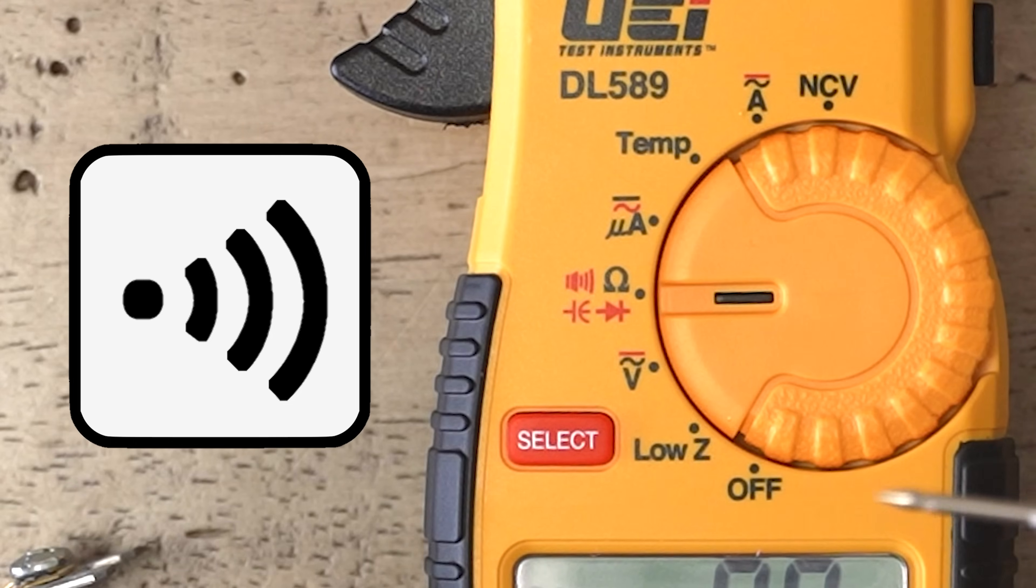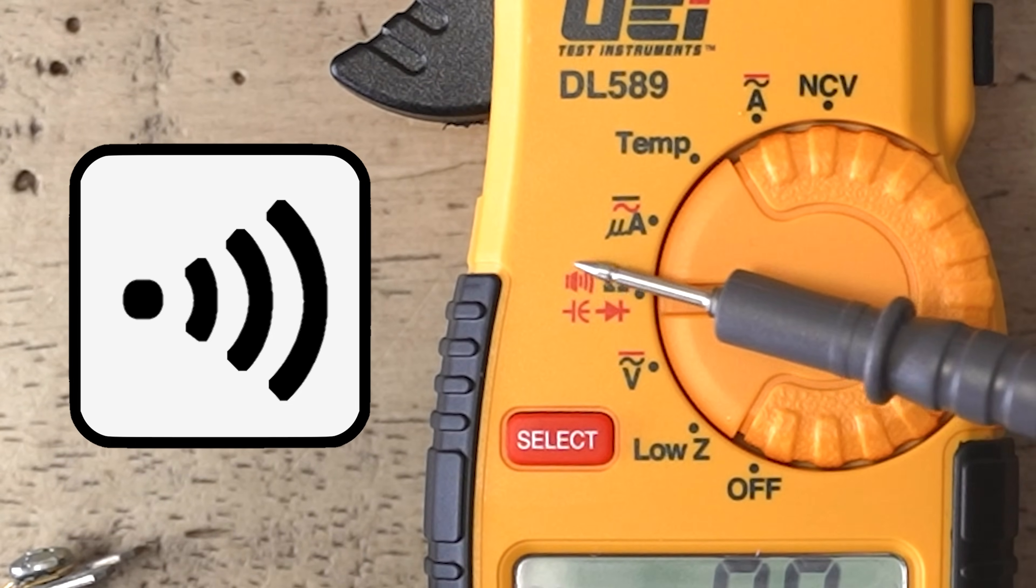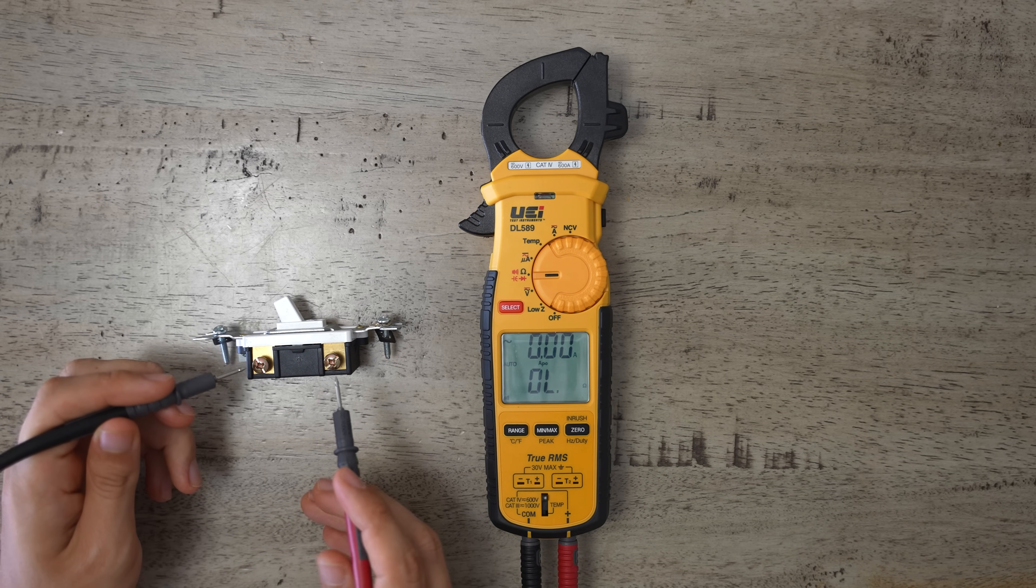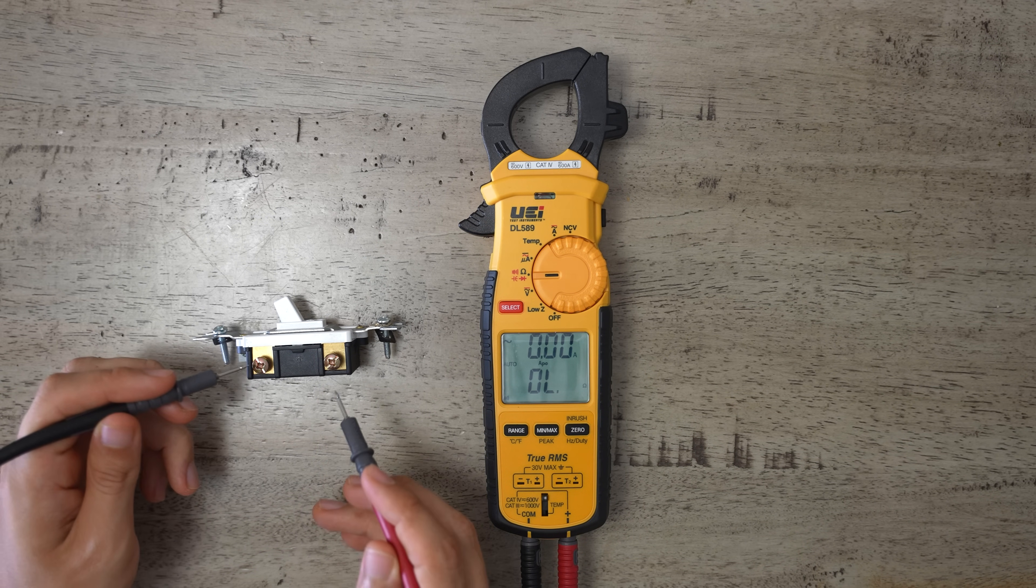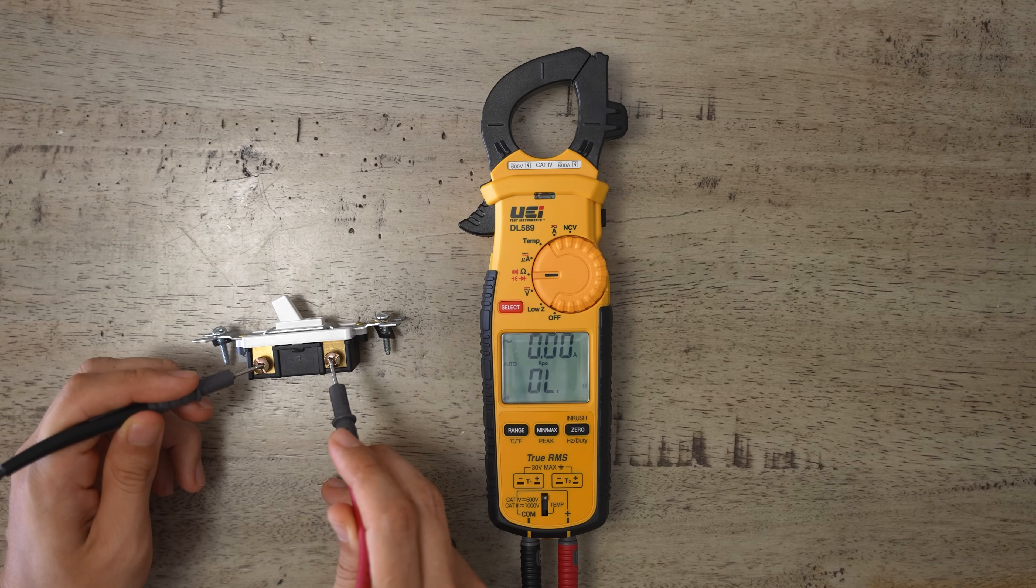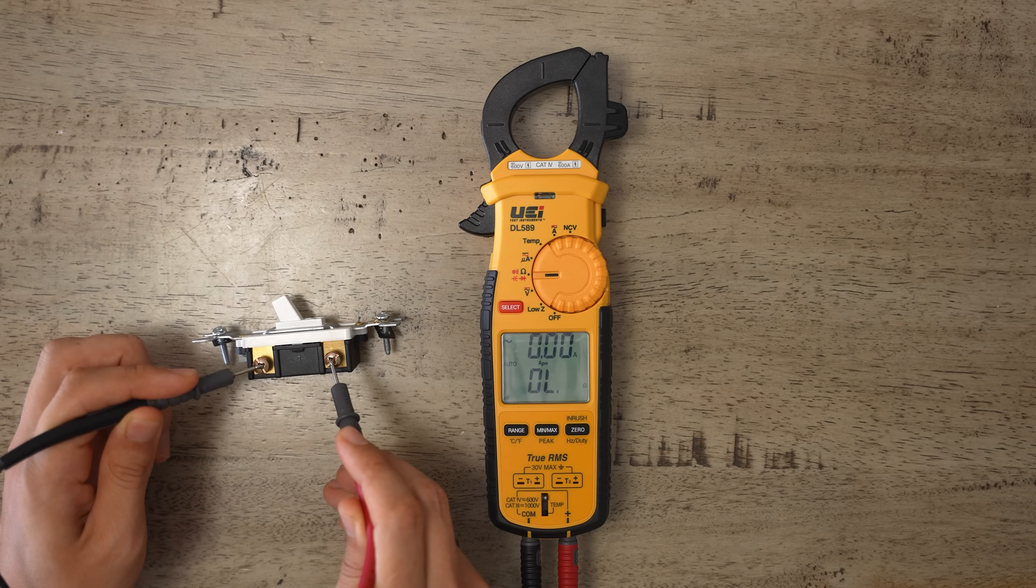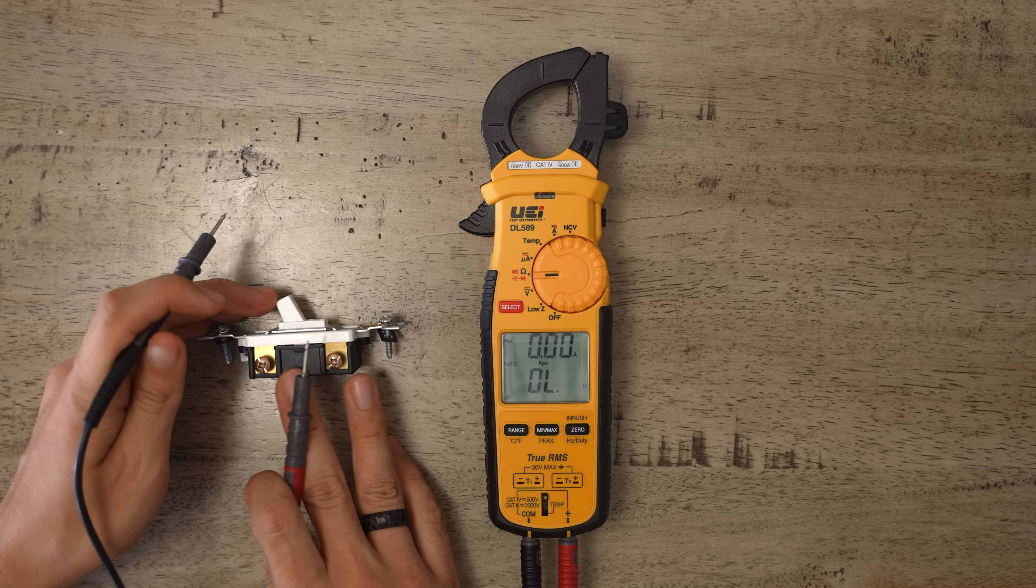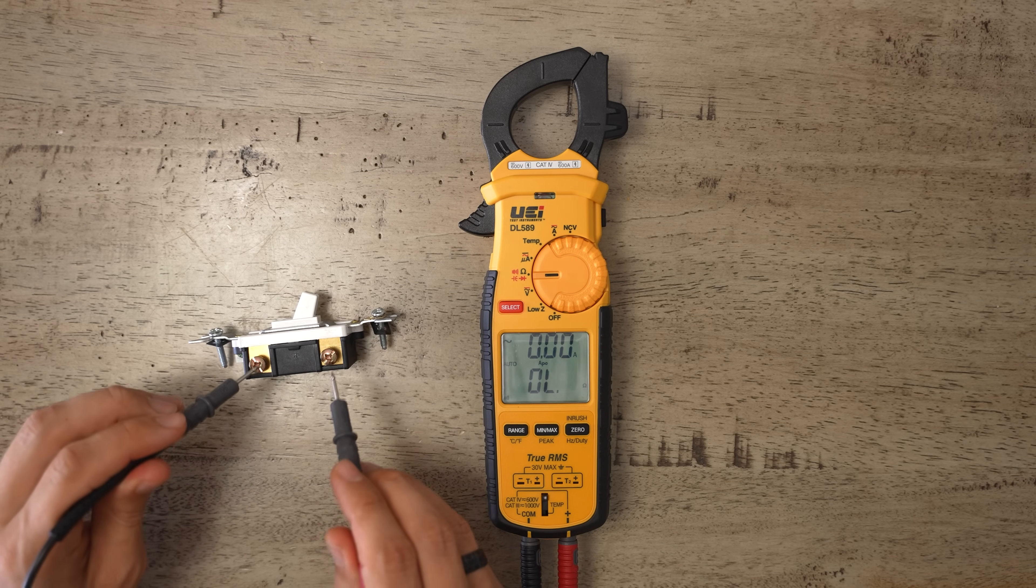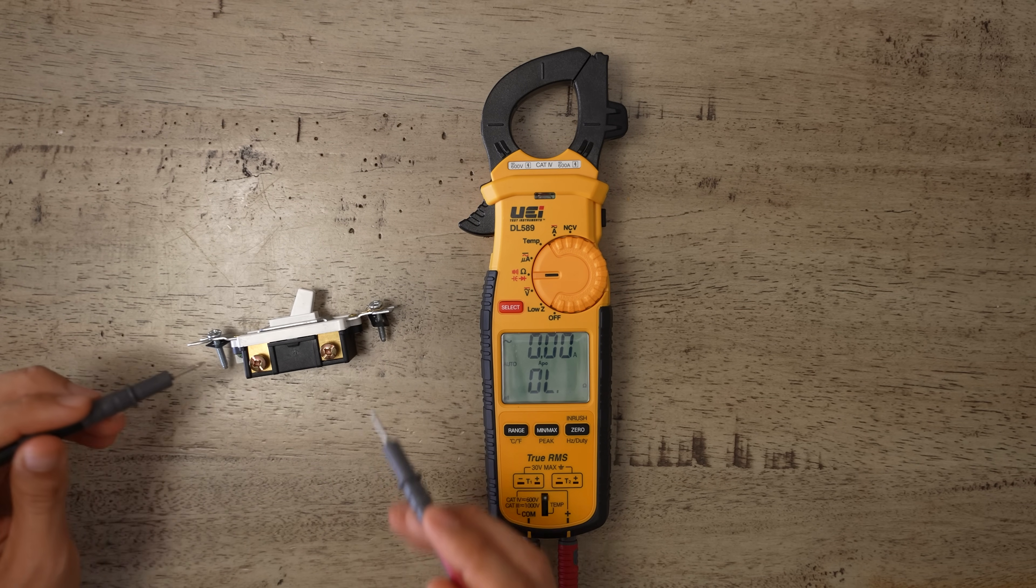Another really useful feature is continuity, which is this symbol right over here. Checking continuity is similar to resistance, but the meter is also going to beep if there's a connection between the two points. So if I put my meter leads on here, we're not hearing anything. That's because the switch is open. But if I close this switch, put it in the on position, now we're hearing a beep.